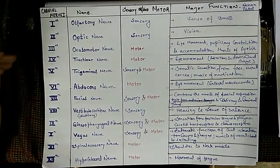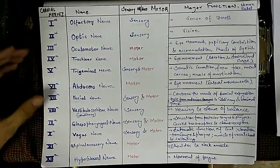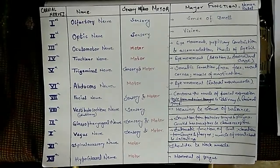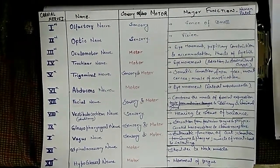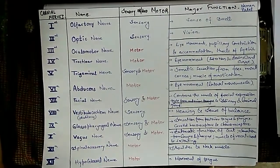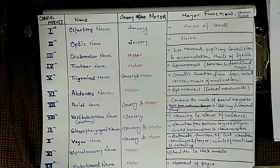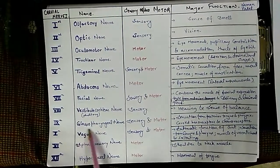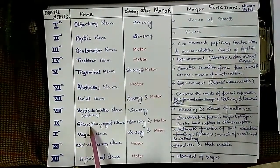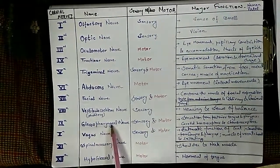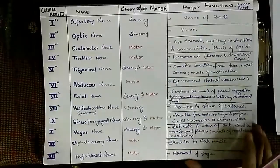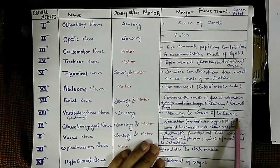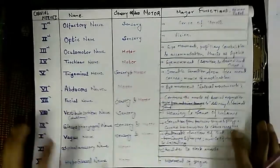The eighth cranial nerve is the vestibulocochlear nerve, also known as the auditory nerve. It is a purely sensory nerve concerned with hearing and the sense of balance. The ninth is the glossopharyngeal nerve, a sensory and motor nerve governing sensation from the posterior tongue and the superior part of the pharynx.